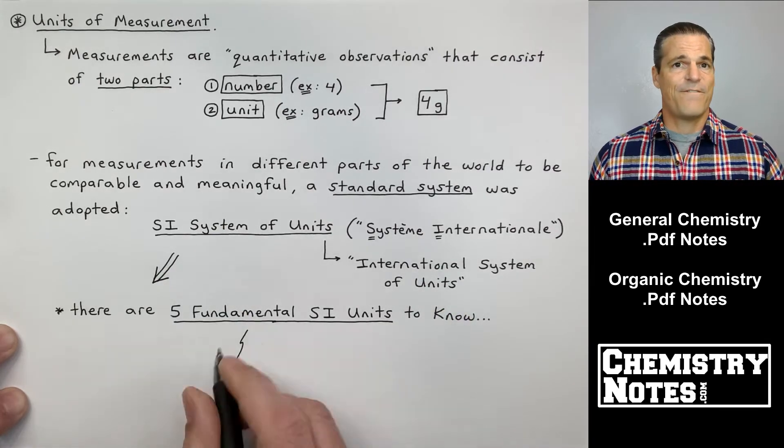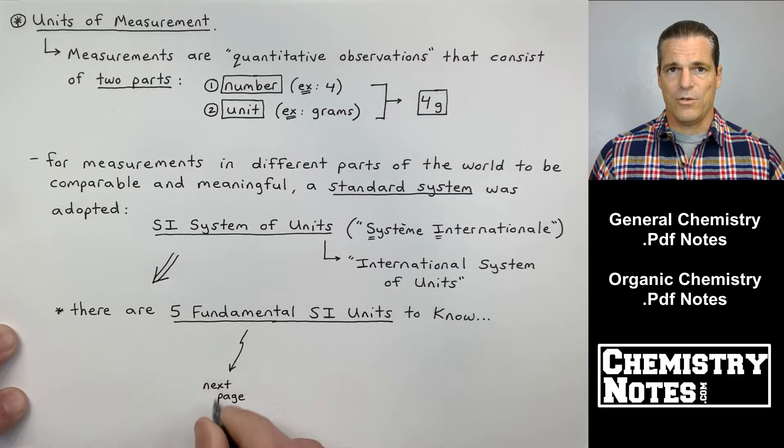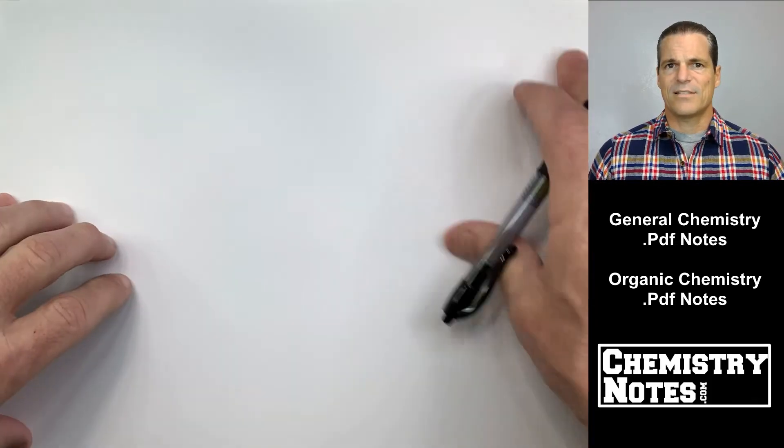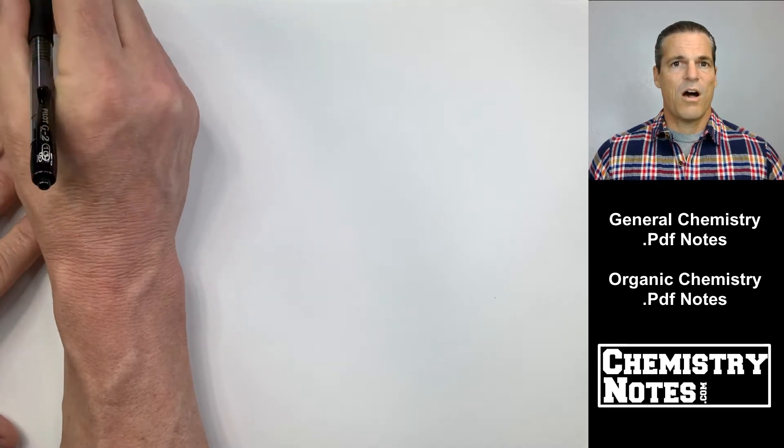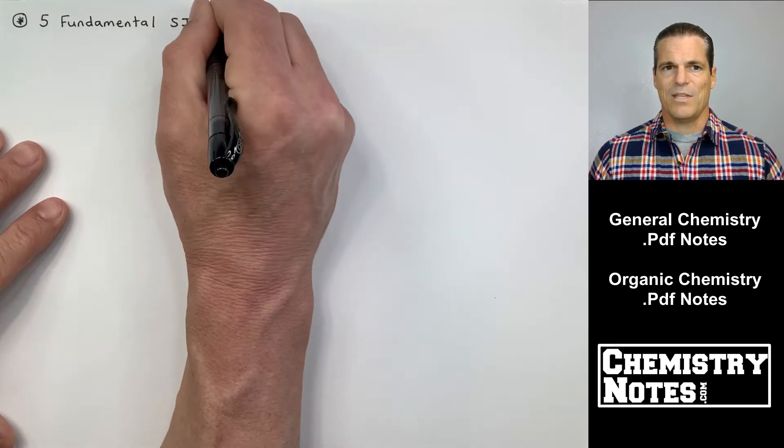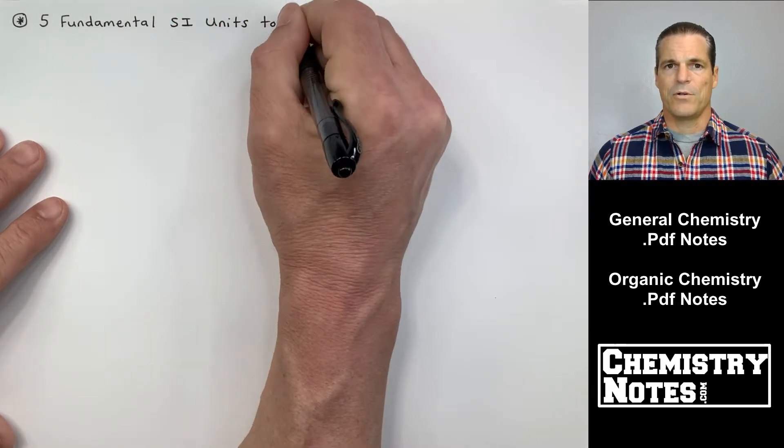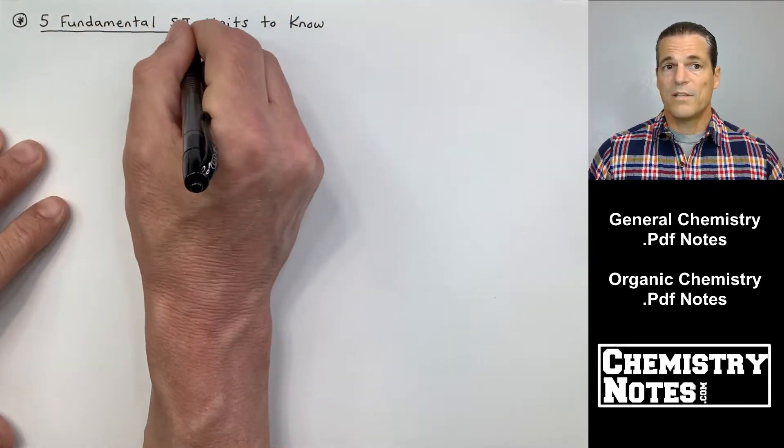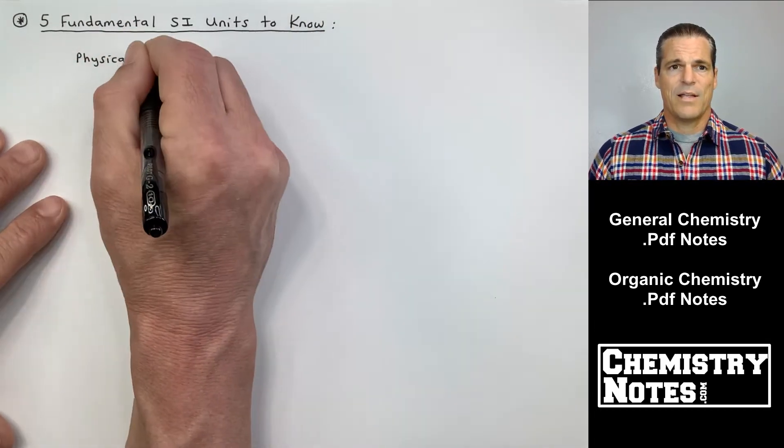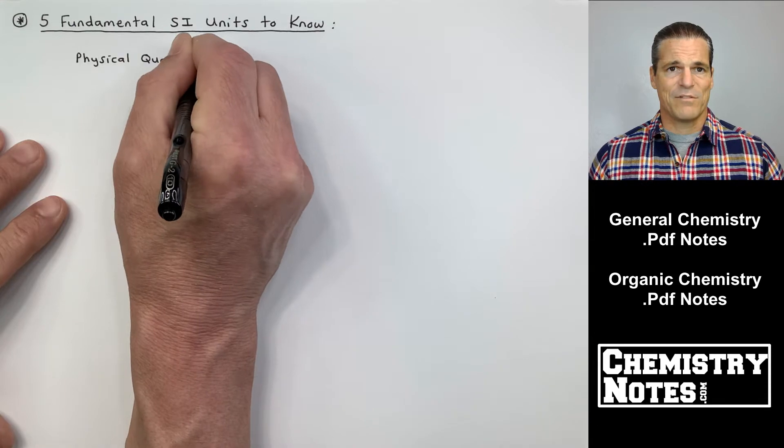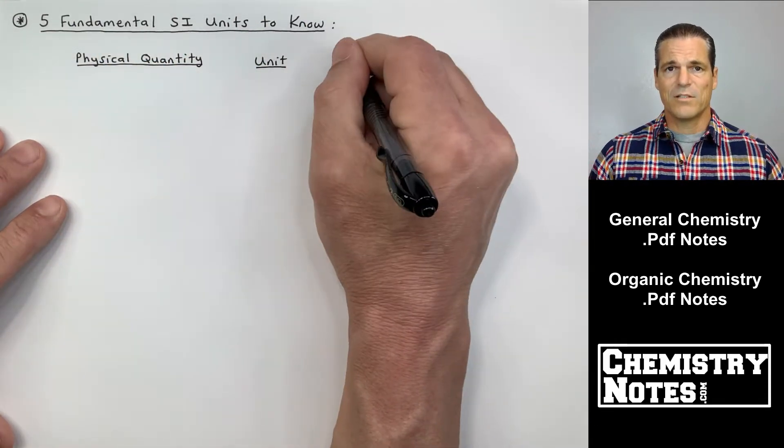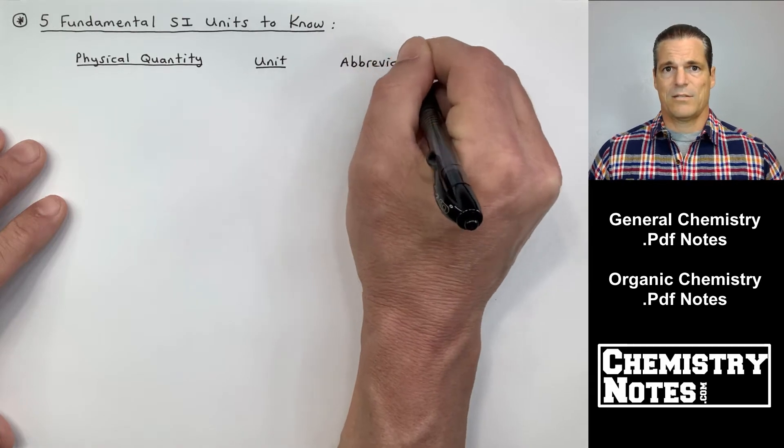The SI stands for System Internationale. That's French. It's just an international system of units. And there are five fundamental SI units to know. Fundamental units, the SI fundamental units are often called SI base units. So if you ever see SI base units, it means the same thing as SI fundamental units. So what are these five fundamental SI units that I need to know? And these are units that are not derived from anybody else. These are original fundamental base units.